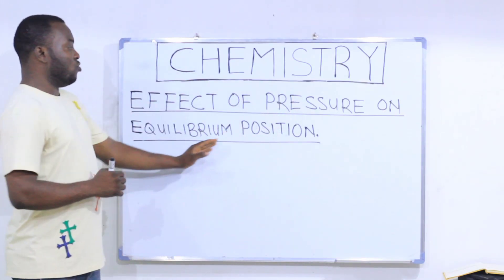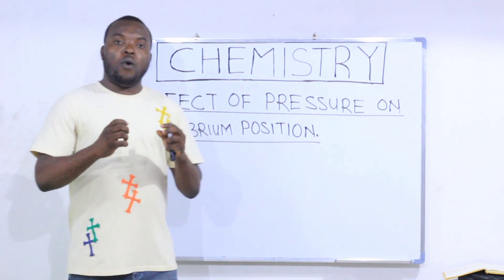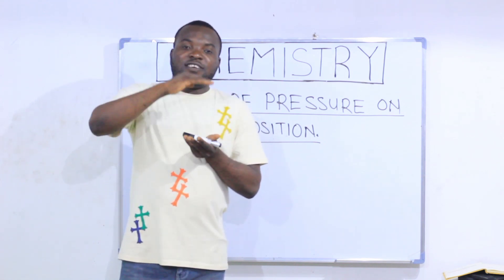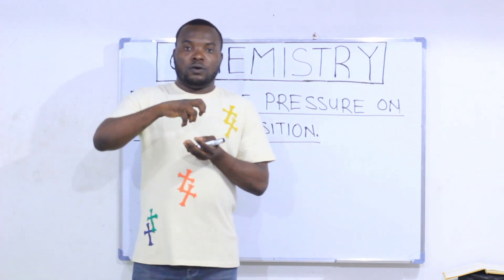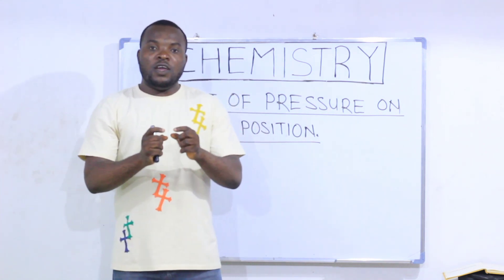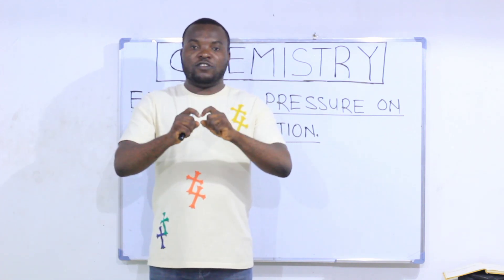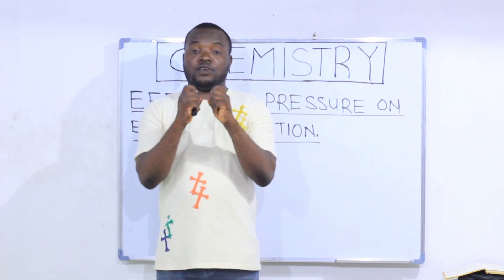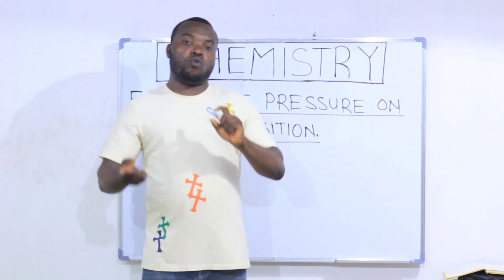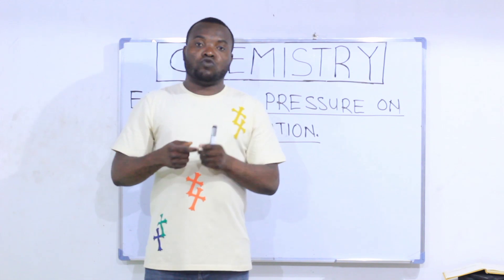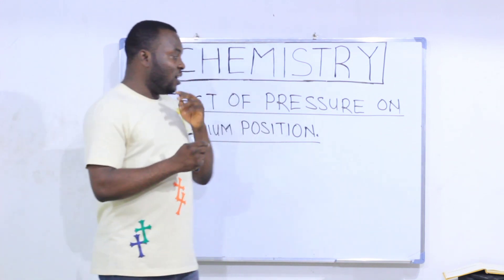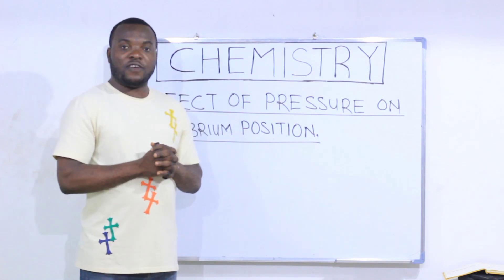Effect of pressure on equilibrium position. When a chemical reaction is in equilibrium state, there is a certain amount of pressure present in the reaction vessel that maintains the equilibrium position. If this pressure increases or decreases, the equilibrium position will be lost. The reaction will have to adjust to cancel that change — that increase or decrease in pressure. Let's see how to solve problems on pressure effects of equilibrium reactions.